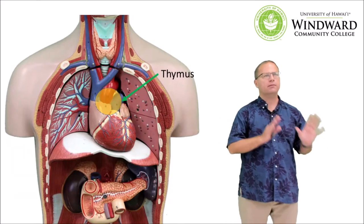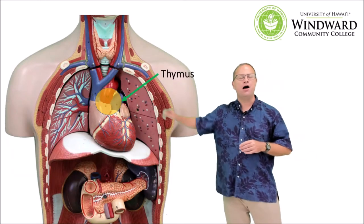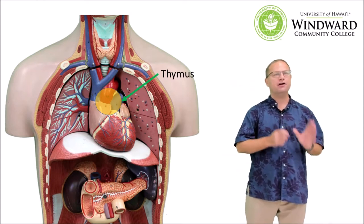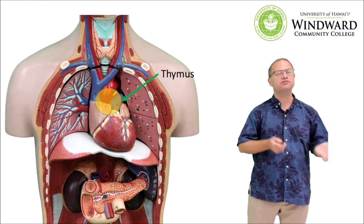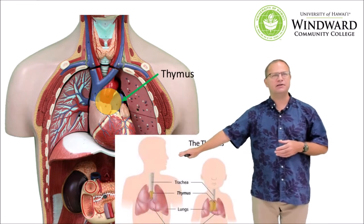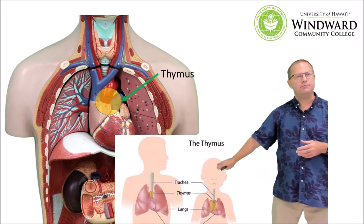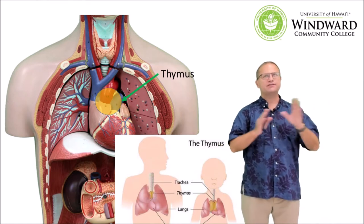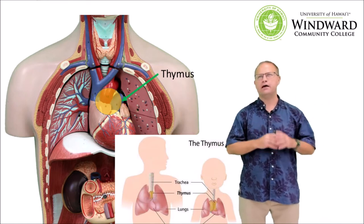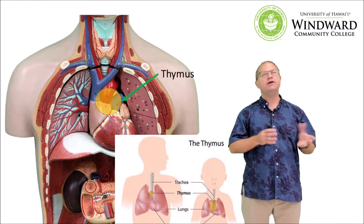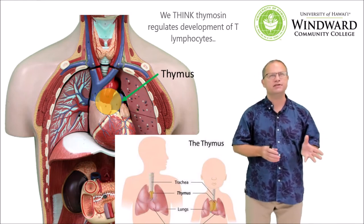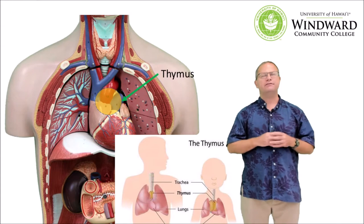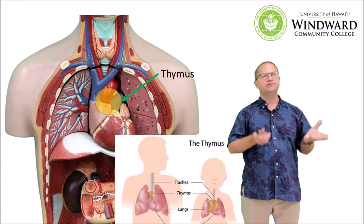Now let's go back and talk about the thymus. We can't actually see the thymus on most anatomical models because it would obscure the heart. In reality, the thymus is a very small gland and it gets proportionally smaller as we get older — in a toddler it's fairly big, but as we age it gets smaller and smaller. The thymus helps to regulate immunocompetence of white blood cells, and it also produces the hormone thymosin that helps to regulate the rate of maturation of those white blood cells.